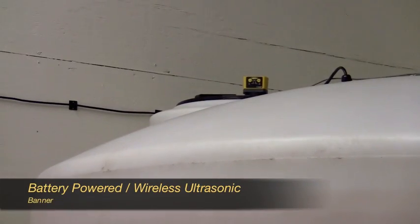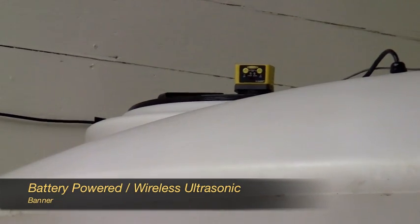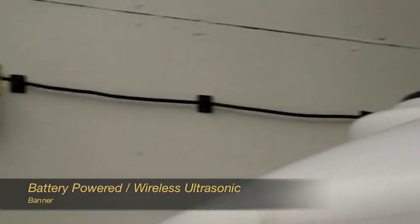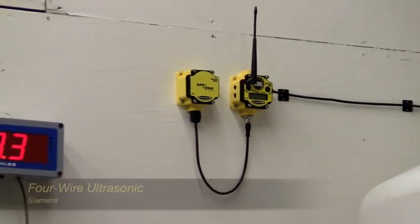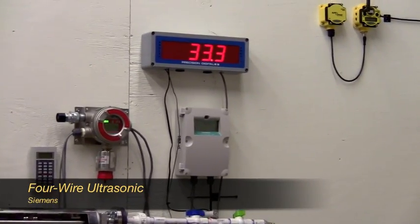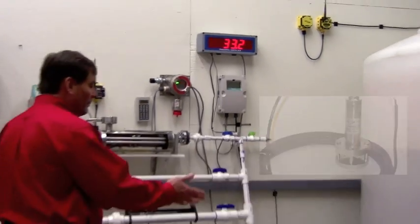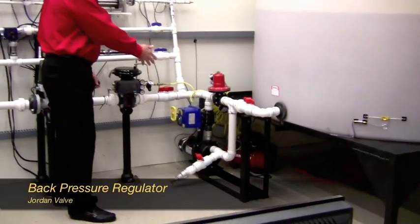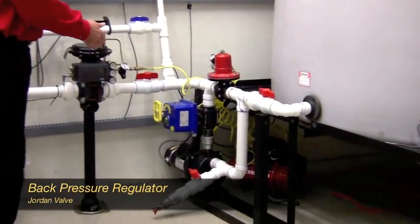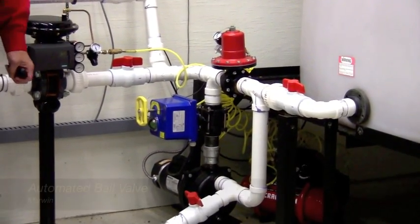We have a battery-powered wireless ultrasonic device, and inside the tank a four-wire ultrasonic device, the transducer only, and a submersible transducer. Moving to the piping of the tank we have a Mark 50 back pressure regulator from Jordan along with a Marwin ball valve.